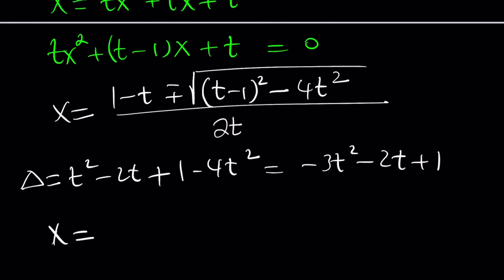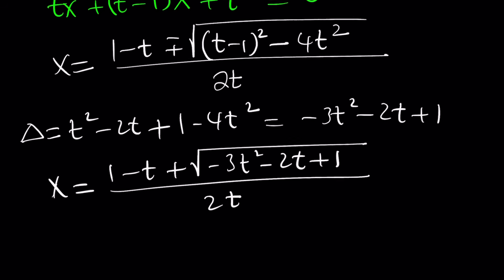So now we can plug it in. And there are two solutions from here. Should we, which one should we use? And my understanding is it doesn't matter. So let's go with the plus sign. Okay. So the square root of delta, which is negative 3t squared minus 2t plus 1, and all of that is divided by 2t. Awesome.